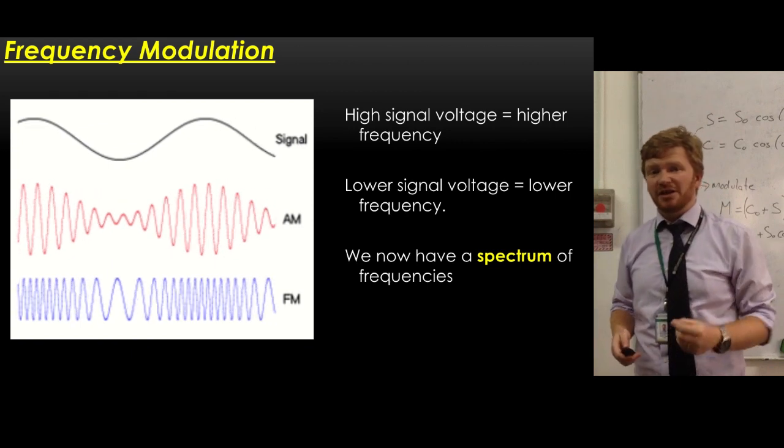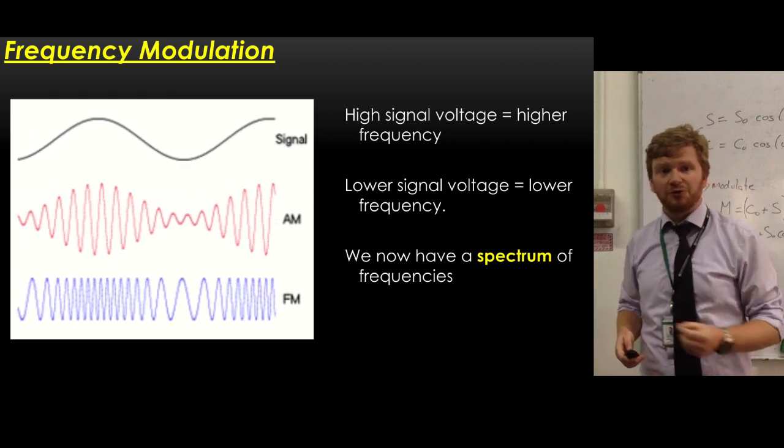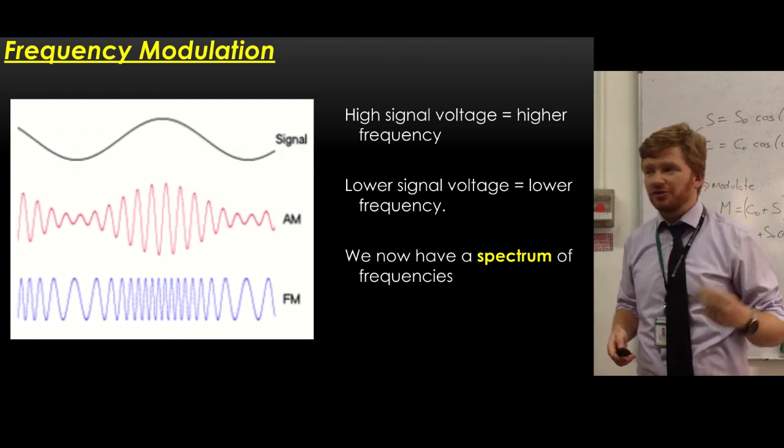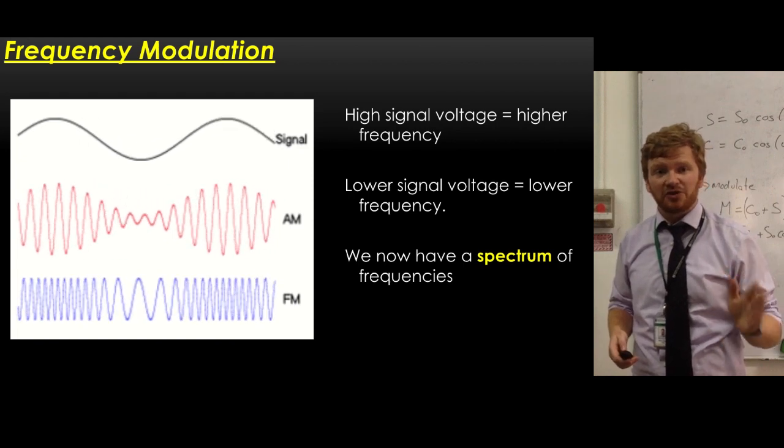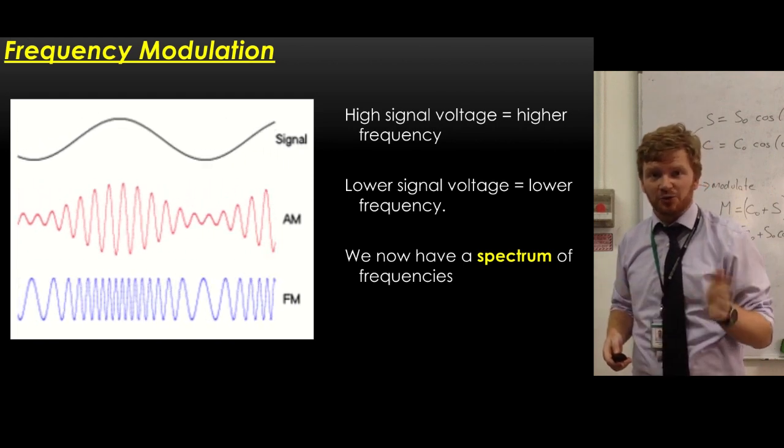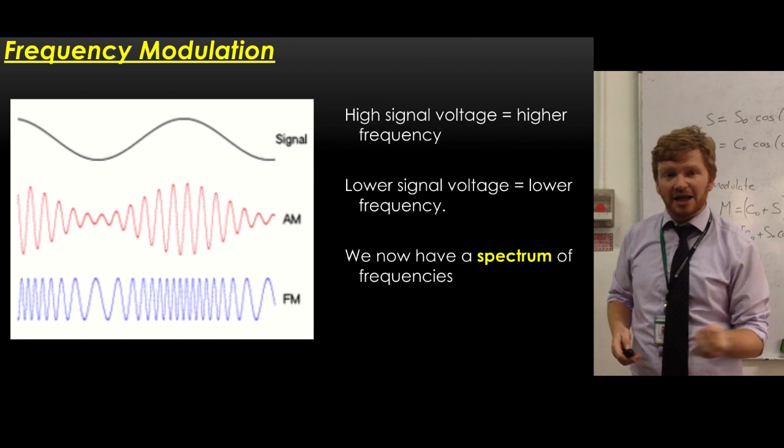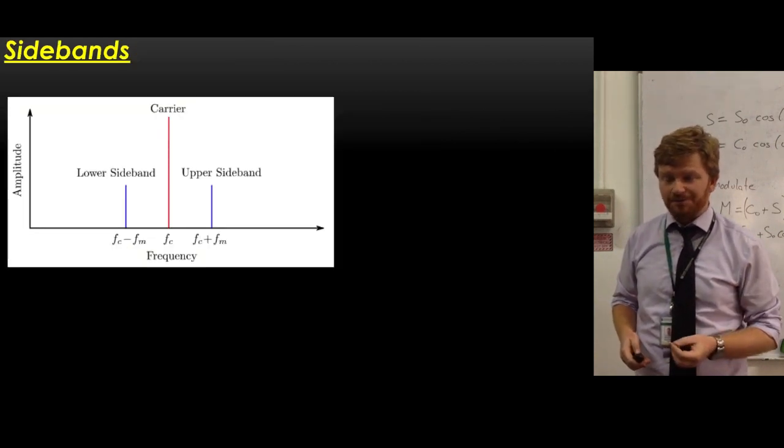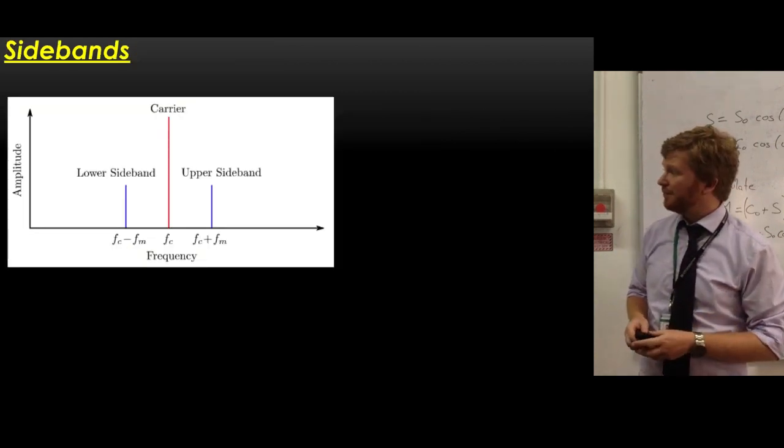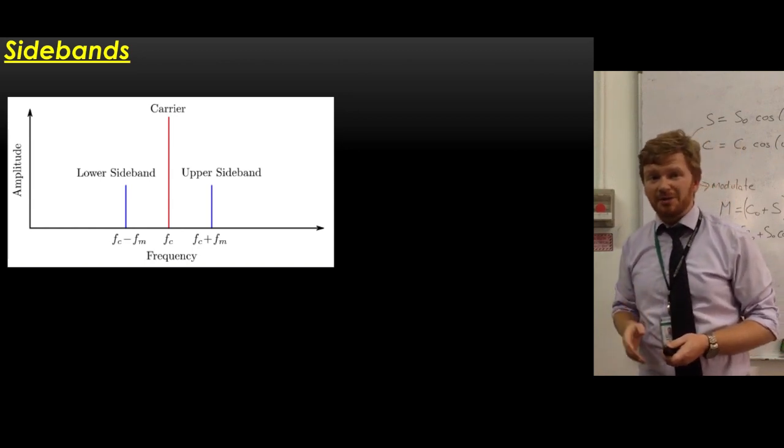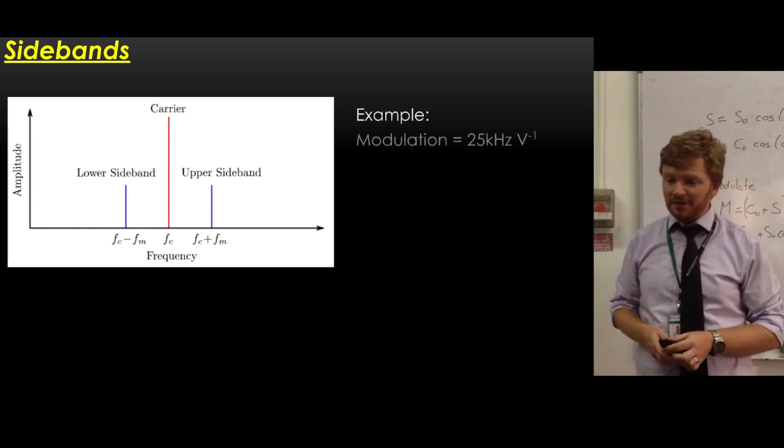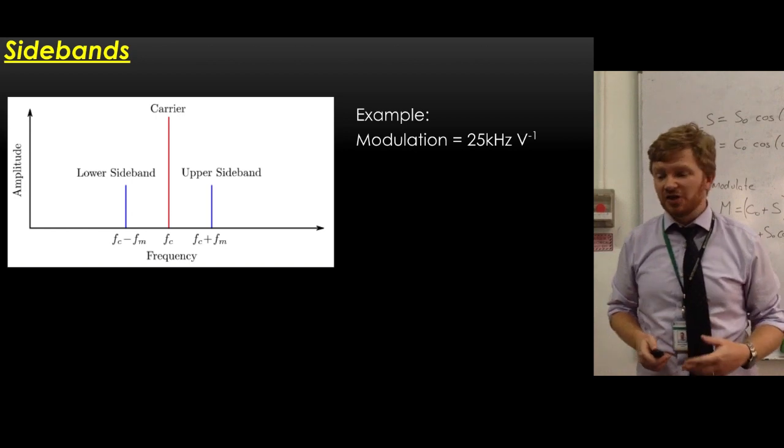Now this means, however, that we're going to now need a spectrum of frequencies. Amplitude modulation, we were quite happy sitting there with just our carrier frequency. That was all that was changing in time. Now, however, we're going to end up with a spectrum of frequencies. So let's think about that. This is a classic diagram that you'll probably see quite a lot in your book and maybe in the exam. So this is a typical case.